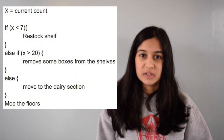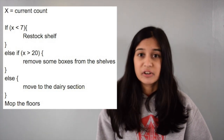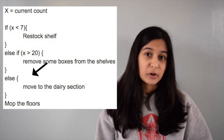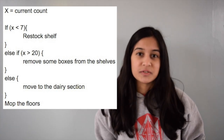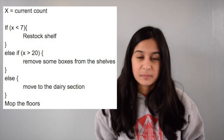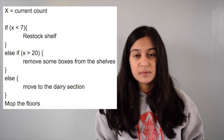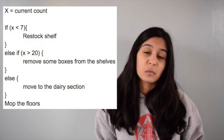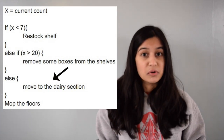Returning to our pseudocode, let's add an else statement. We already looked at what happens when x is less than 7 and what happens when x is greater than 20. But what about when x is between 7 and 20? In that case, in our else statement, we have that we are going to move to the dairy section. Suppose we counted 9 boxes of cereal. Looking at the if statement, our condition is false because 9 is not less than 7. Because this is false, we're going to look at the else-if statement. However, this condition is also false because 9 is not greater than 20. Because both conditions were proven false, by default we're going to execute the commands in the else statement — so we're going to move to the dairy section.